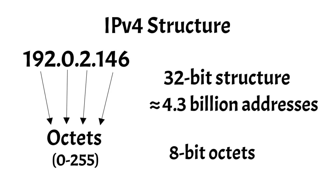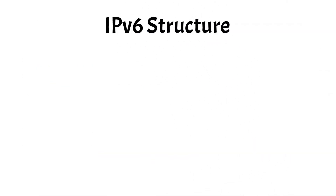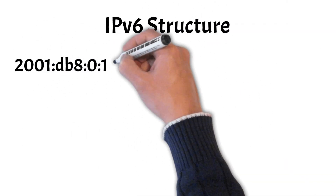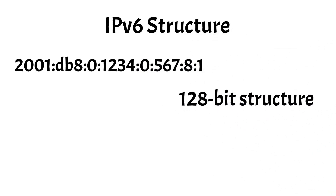Now let's analyze the structure of IPv6 addresses. IPv6 addresses have a 128-bit structure, represented in hexadecimal format consisting of eight groups of four hexadecimal digits separated by colons.